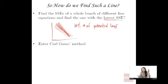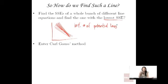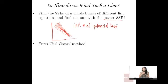We can't find the SSEs of an infinite number of lines — that's just not an option for us. So thank you to our hero, Karl Gauss. He was a mathematician and scientist — a German guy — who has helped us out a lot in statistics. Karl Gauss invented the method of least squares, and through his method we can easily find the slope.